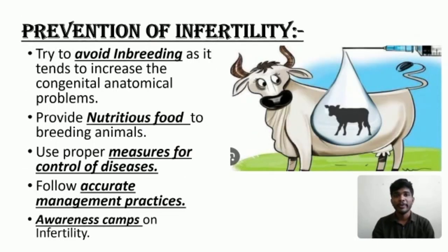To prevent or manage infertility: try to avoid inbreeding, as it tends to increase congenital anatomical problems. Provide nutritious food to the breeding animals. Use proper measures for control of diseases. Follow accurate management practices. And arrange awareness camps about infertility.